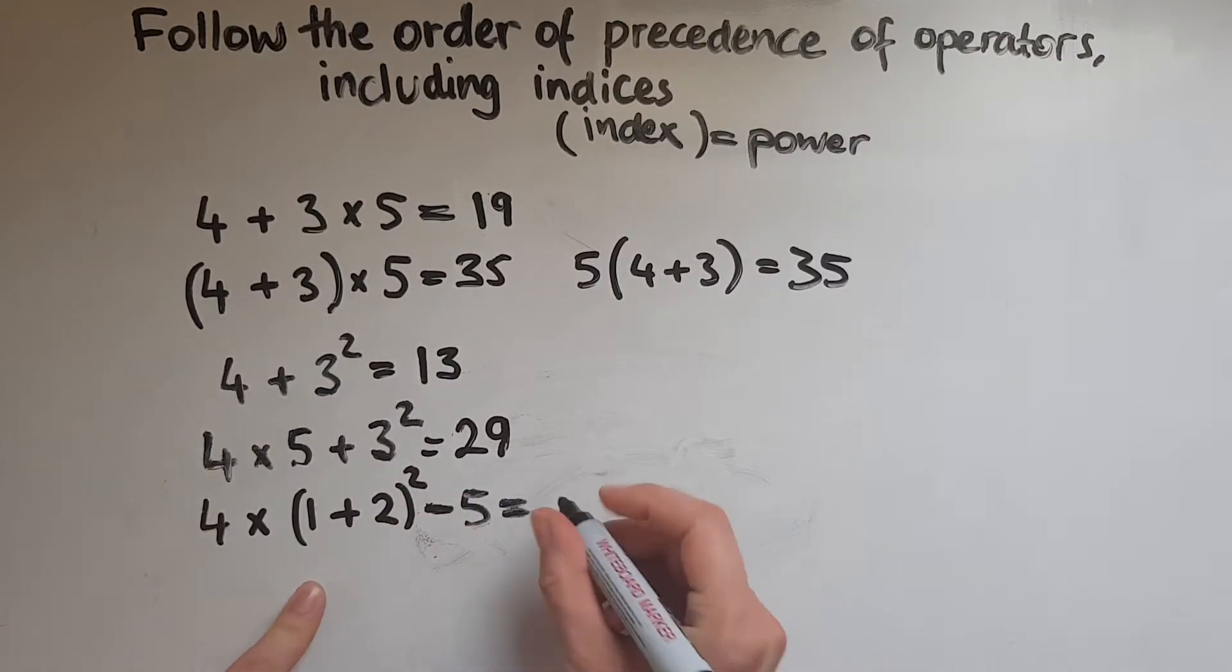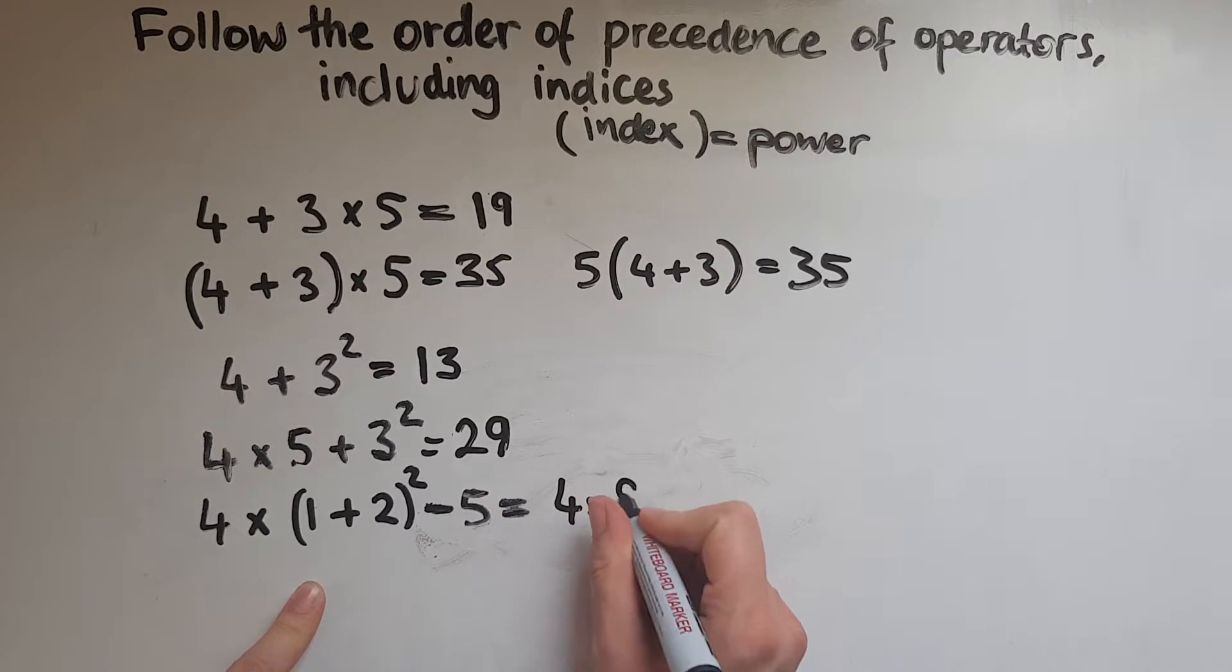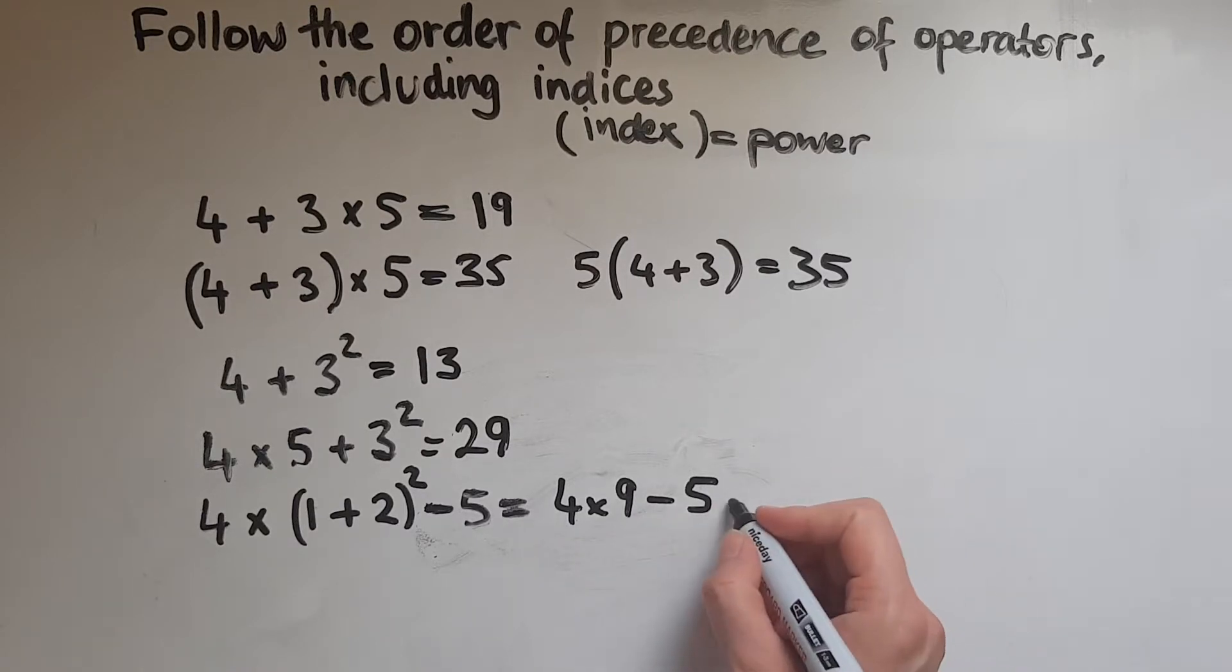So we've got now 4 times 9 minus 5. Which one would I do out of these two? We'll do multiplication first. So 4 lots of 9 is 36 minus 5 is 31.